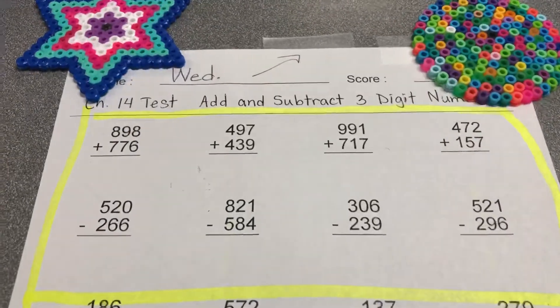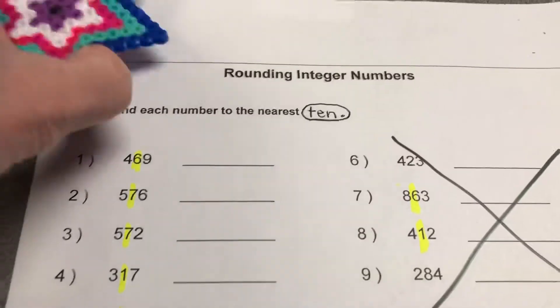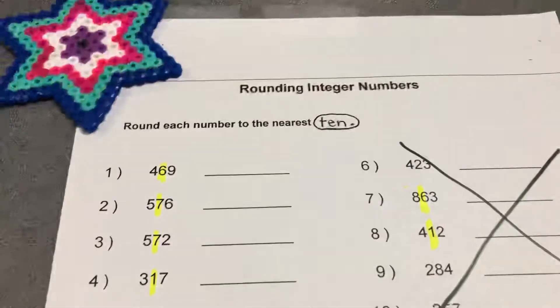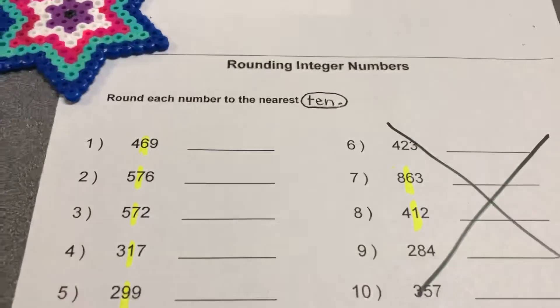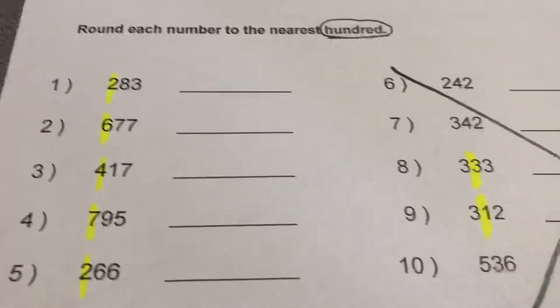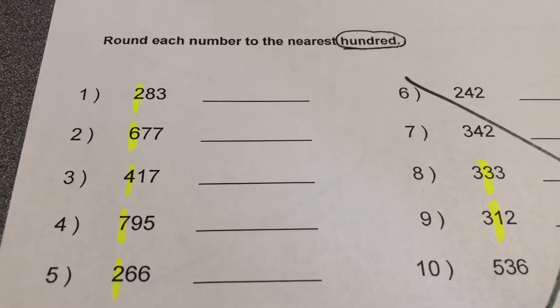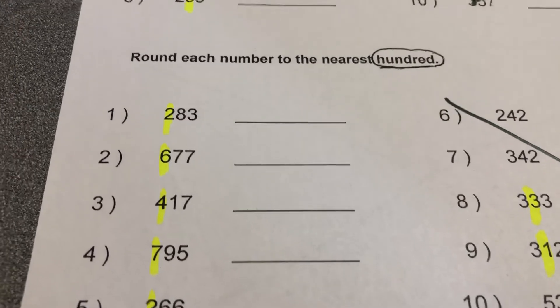Just do the first 8 and then on the back, you're going to round each number to the nearest 10. You're just going to do 1 through 5 and the bottom part, round to the nearest 100, 1 through 5. Alright?